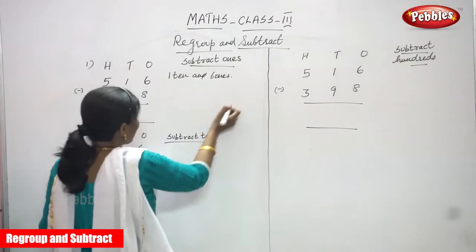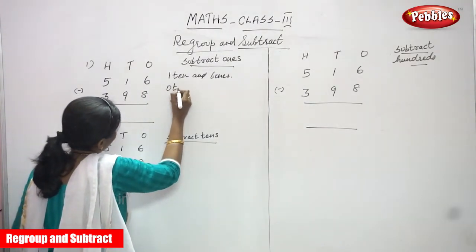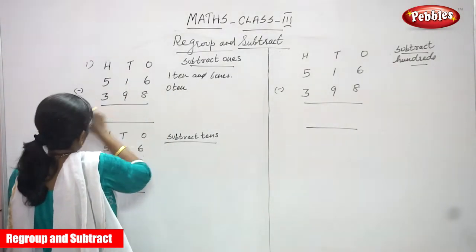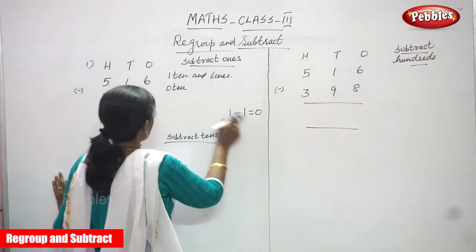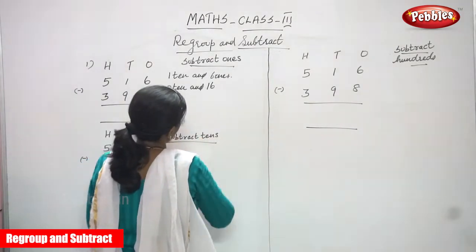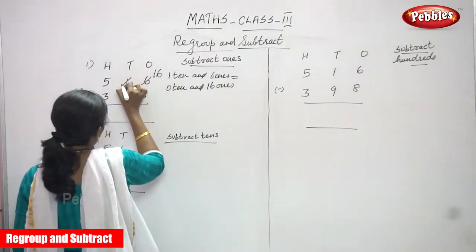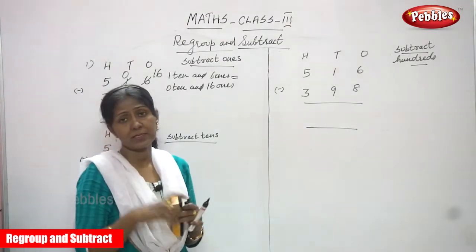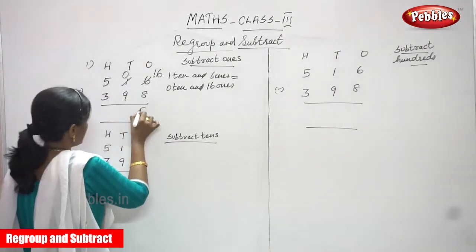We have one ten and six ones. We borrow that one ten, so the tens place becomes zero tens, and the six ones become sixteen ones. This six becomes sixteen and this one becomes zero. Sixteen is a greater number, eight is smaller. Now we subtract: sixteen minus eight — counting up from 8: 9, 10, 11, 12, 13, 14, 15, 16 — the answer is 8.